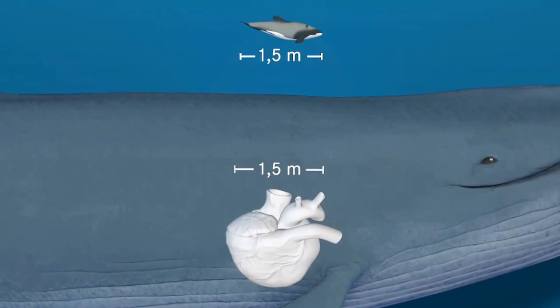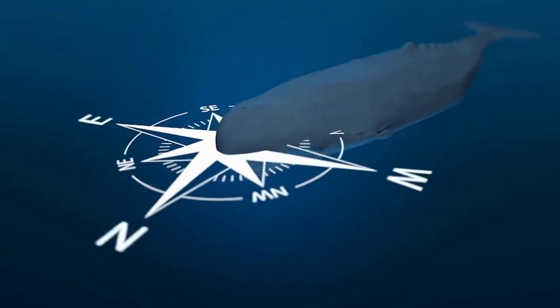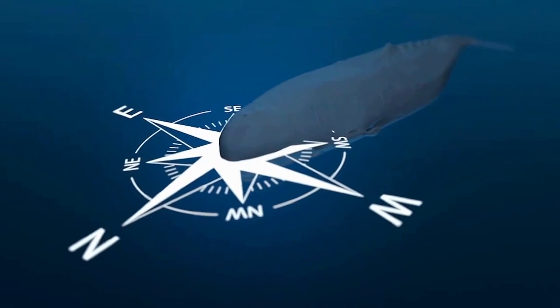Its heart is so big that a person could almost stand in it. Cetaceans find their way even in darkest ocean depths. They emit calls and detect obstacles and prey from the reflected echoes.